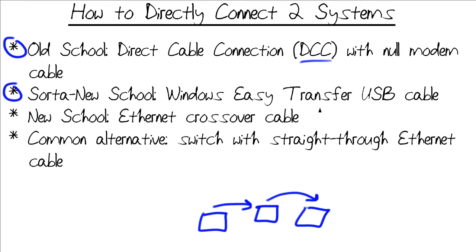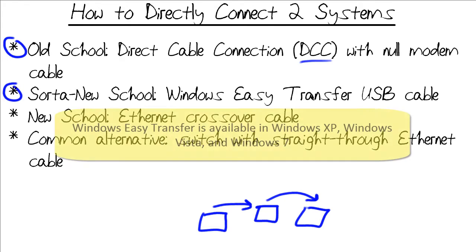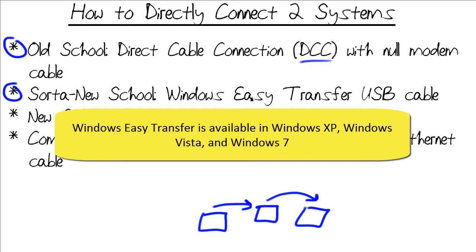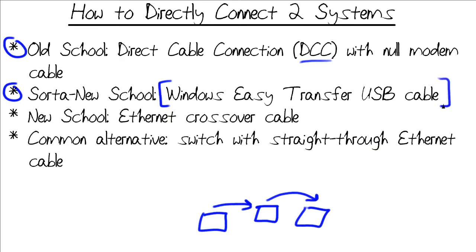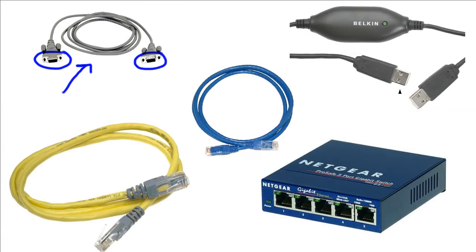Later, we had the Windows Easy Transfer system in later versions of Windows. This is a proprietary file transfer technology that Microsoft developed for two reasons. Number one, Microsoft is a hardware original equipment manufacturer, so they partnered with other OEMs — Belkin is one example — who created this proprietary double-headed USB Easy Transfer cable. You simply plug the USB ports into each system, and the Easy Transfer cable has crossover circuitry in the middle that takes care of crossover issues. Then you run the Easy Transfer wizard, the File and Settings Transfer wizard, to do a data backup or restore.